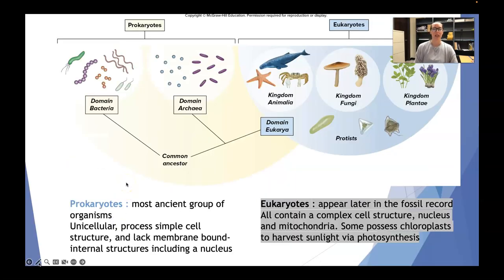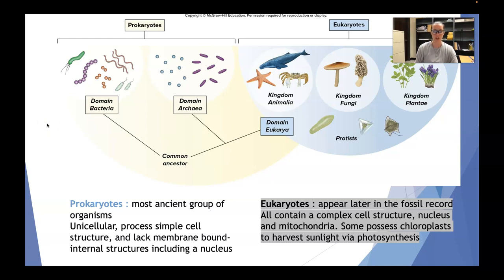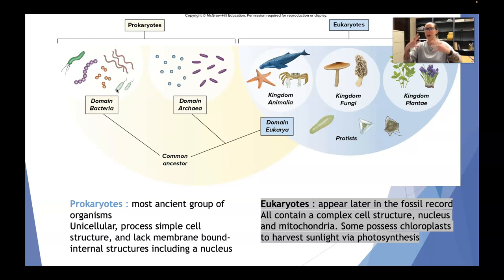What we have here is the breakdown between prokaryotes on the left and eukaryotes on the right. Prokaryotes are the most ancient group of organisms — they are unicellular with a single cell structure but lack membrane-bound internal structures including a nucleus. You can think of it as bacteria, and bacteria is still very present in today's world. Your body is covered in bacteria — your internals, your face, your mouth — it's microscopic, you can't see it with your own eyes.